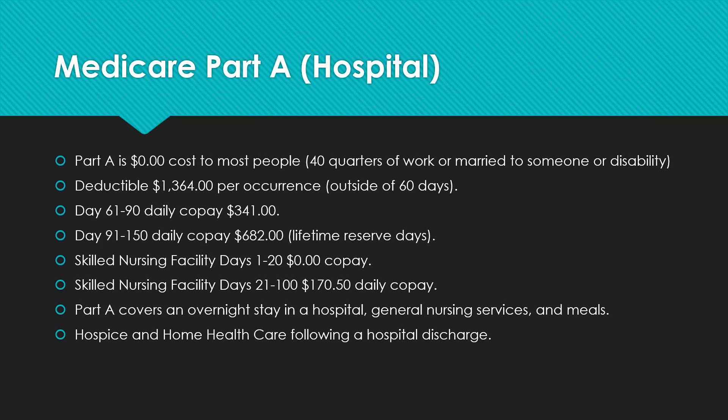Part A is zero cost to most people — those who have put in 40 quarters of work and paid into the system, are married to someone who did, or have been declared disabled by the U.S. government for a period of 24 months. You are responsible for a $1,364 deductible — once per occurrence. If the occurrence is within a 60-day window, you won't face a second deductible. However, if it's outside 60 days, you'd be responsible for a second deductible if rehospitalized.